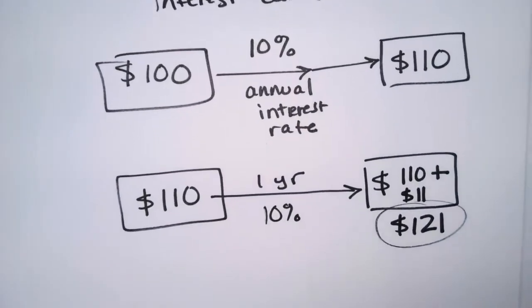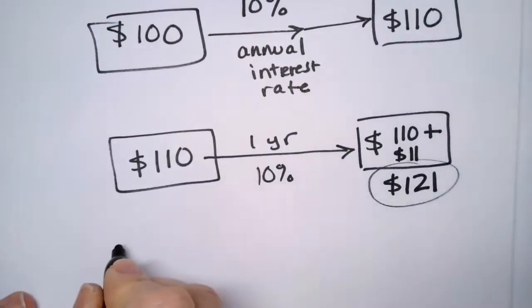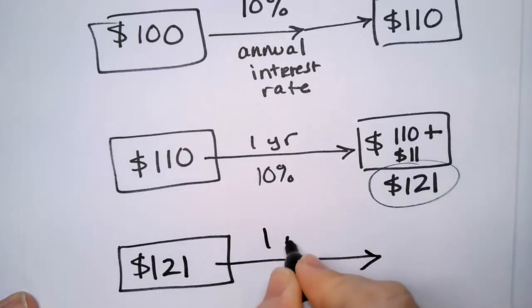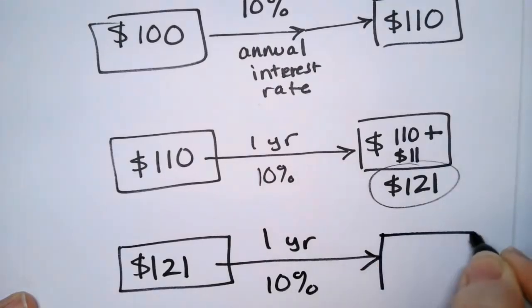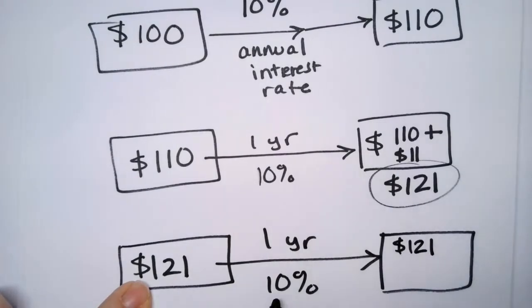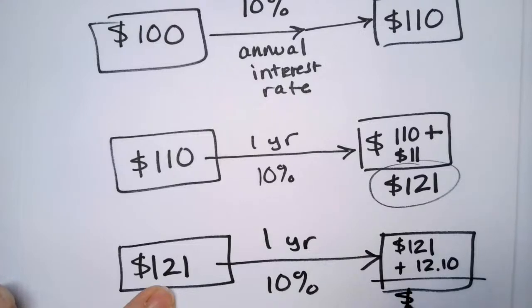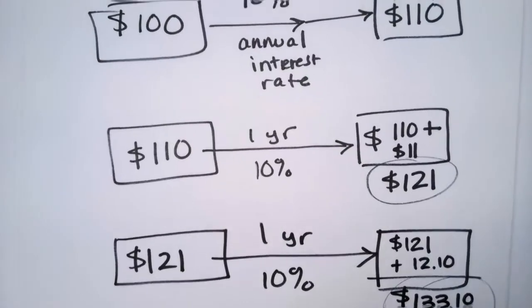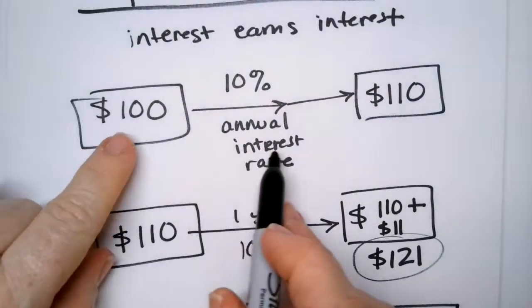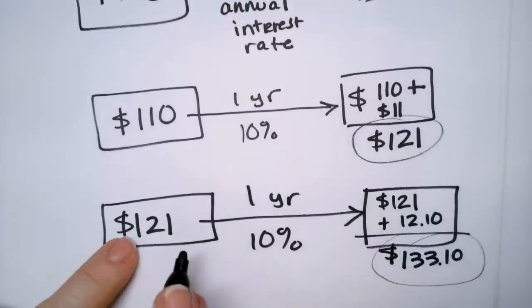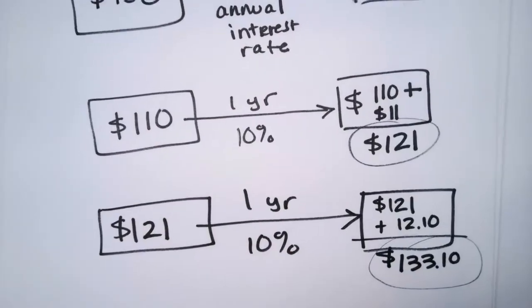This is different than what we did before with simple interest. So now we have $121. Another year goes by at 10%. Now what do we have? We have what we had before 121 and we have 10% of that, so plus $12.10. So now we have $133.10. Do you see how it's starting to grow? It's not just this, but it's the principal and the interest together. Let's earn interest on that. Now let's put that in here and earn more interest on that. And this is called compound interest.